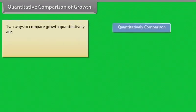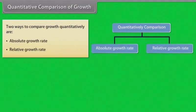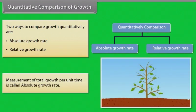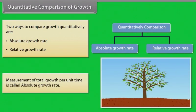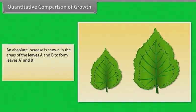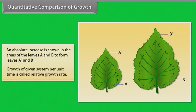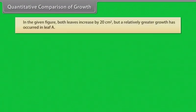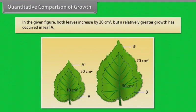Quantitative comparison of growth: Two ways to compare growth quantitatively are absolute growth rate and relative growth rate. Measurement of total growth per unit time is called absolute growth rate. An absolute increase is shown in the areas of leaves A and B to form leaves A1 and B1. Growth of a given system per unit time is called relative growth rate. In the given figure, both leaves increase by 20 cm² but a relatively greater growth has occurred in leaf A.